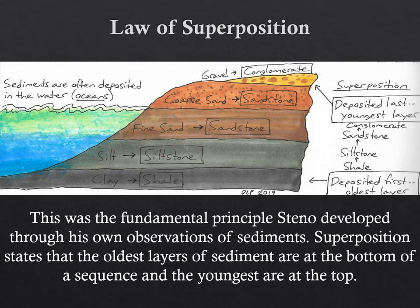The law of superposition states that the oldest layers of sediment are at the bottom of a sequence and the youngest are at the top. On this illustration, several beds of sedimentary rock have been formed. The correct sequence of this outcrop from oldest to youngest is read from the bottom to the top: shale, siltstone, fine sandstone, coarse sandstone, and conglomerate. The next slide shows the same phenomenon in an actual canyon in Utah.